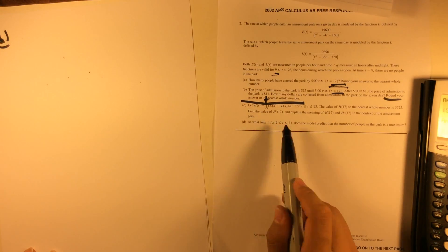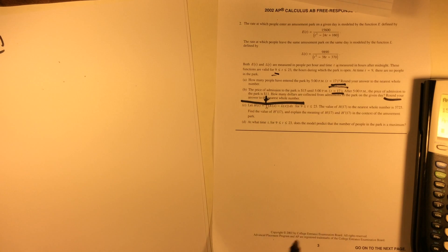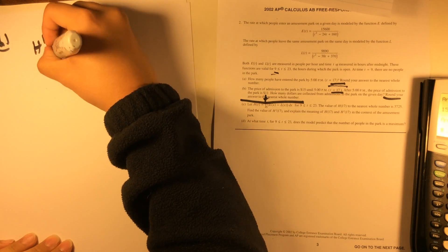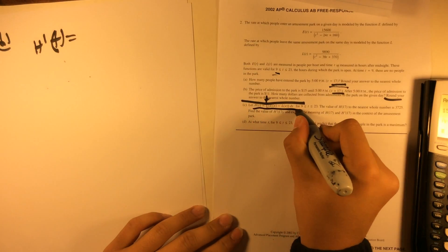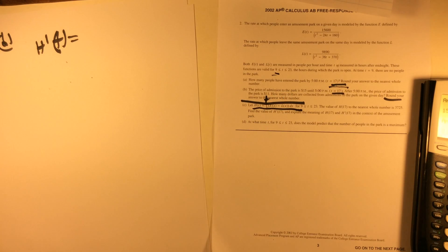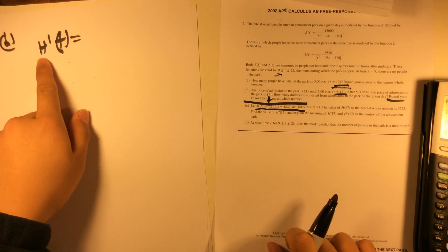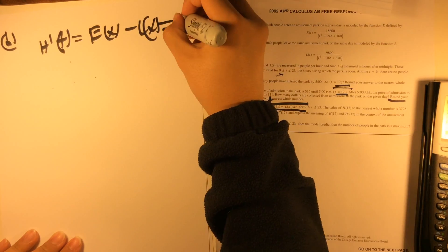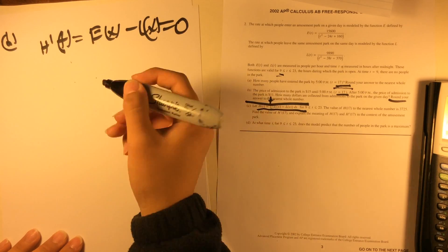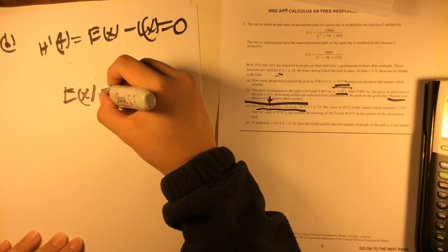Part D. At what time, for T between 9 and 23, does the number of people in park reach maximum? Pretty straightforward. H prime of T equals 0, because the number of people is represented by function H(T), which is an integral. To know when a function is maximum, you have to take the derivative and set it to 0 to get your significant values. Since this is an integral, the derivative is just E(X) minus L(X), and this has to equal 0.